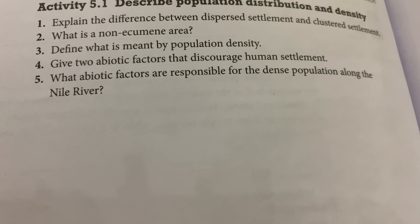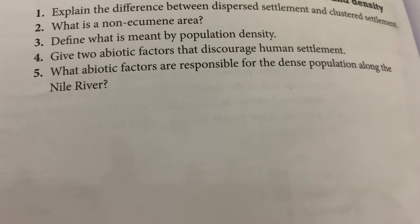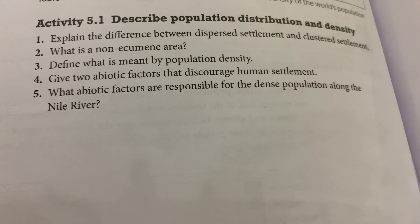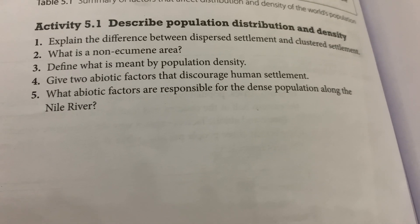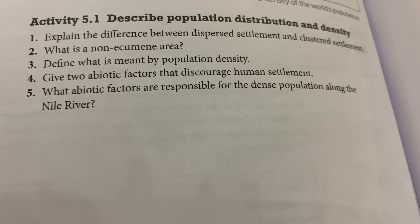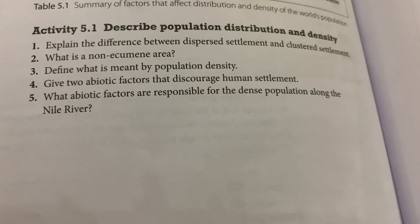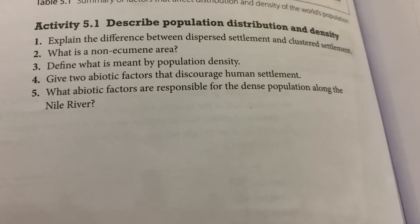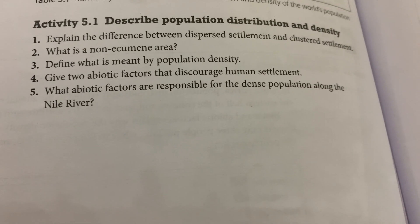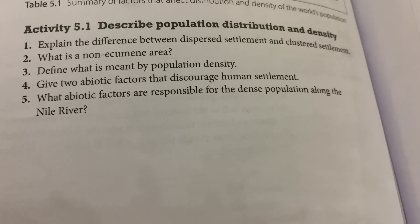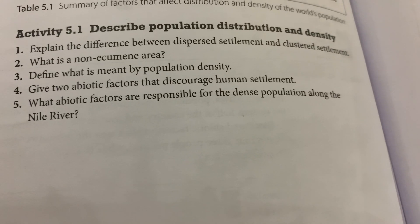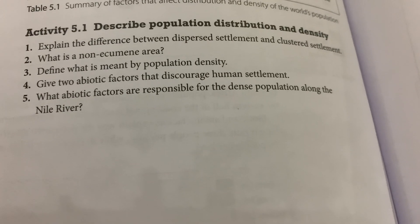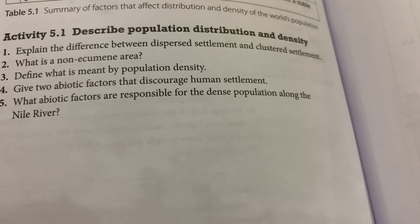The fifth question: what abiotic factors are responsible for the dense population along the Nile River? Along the Nile River it is very fertile, so farming is booming there. You could say fertile soil is an abiotic factor for the dense population. Another reason is that it's very flat there, and the climate isn't too hot or too cold — it's fair. That's why people chose to live there.